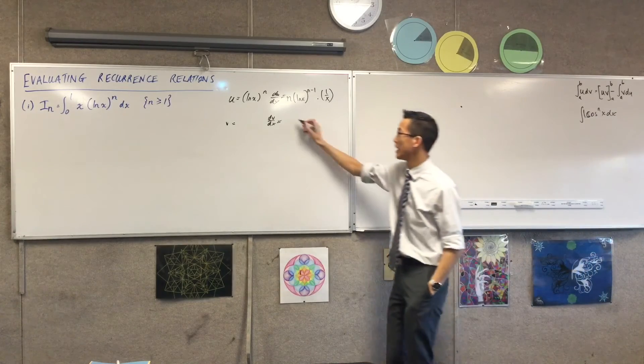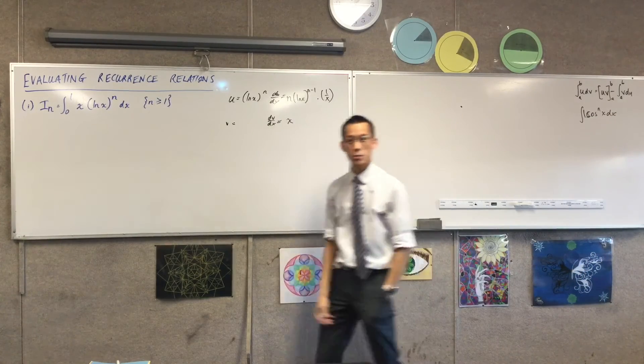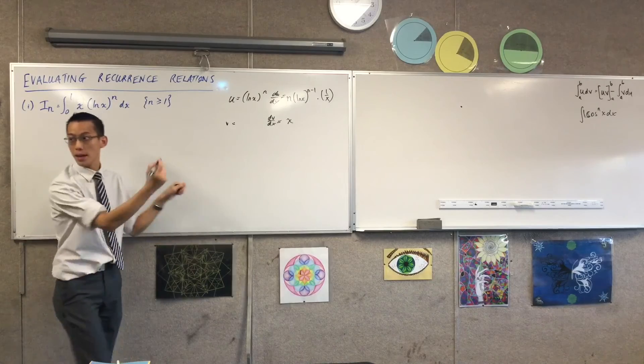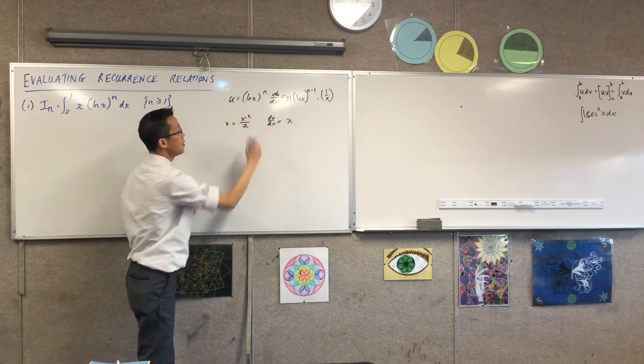Which shows u. Now I guess that leaves this for dv, which means that v, my integral, will be... excellent.